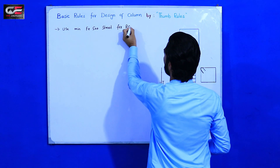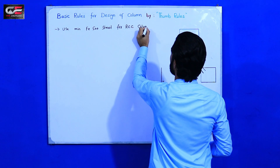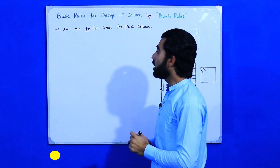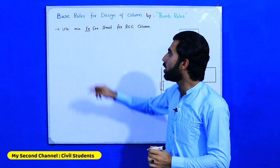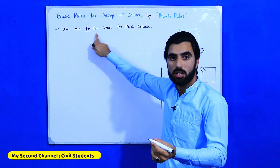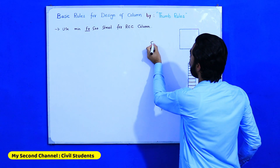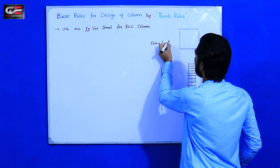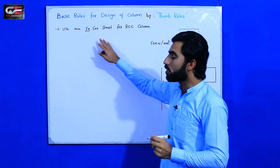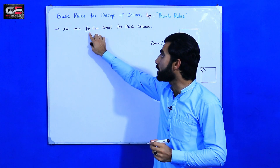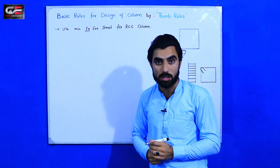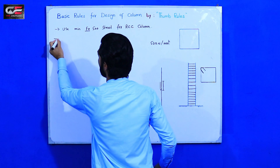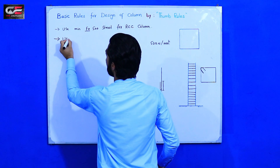The first point: use minimum Fe500 steel for RCC columns. The yield strength of steel is 500 Newton per mm², which is the tensile strength of the steel. So Fe500 steel should be used in RCC columns — this is by thumb rule.